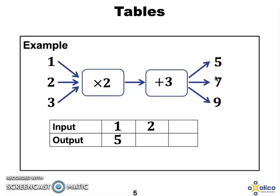When we input 2, the output was 7. And when we input 3, the output was 9. So a table does not show the operators. It only shows input and output.